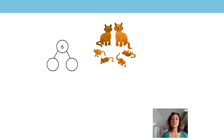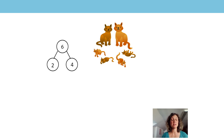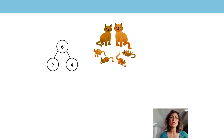So all together I have six cats. Now you might have seen this part-part-whole model before. I have six cats all together. Two of them are adult cats. Four of them are kittens. What does the six represent? The six represents the six cats. What does the two represent? The two represents the two adult cats. And what does the four represent? The four represents the four kittens.